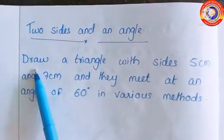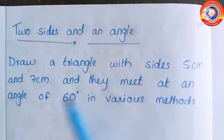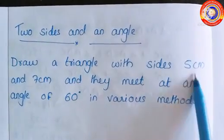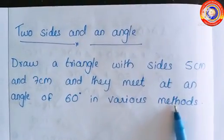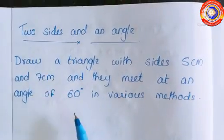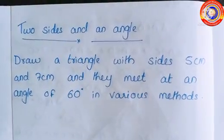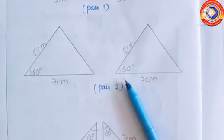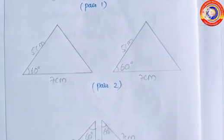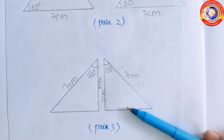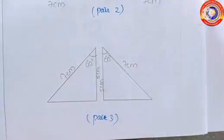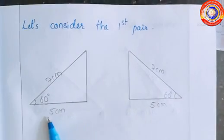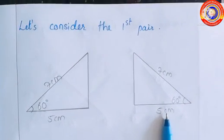Draw a triangle with sides five centimeter and seven centimeter and they meet at an angle of 60 degrees, in various methods. So let's draw the triangles of sides five centimeter and seven centimeter and the angle between these two is 60 degrees. These are the different pairs of triangles which we can draw using these measurements.